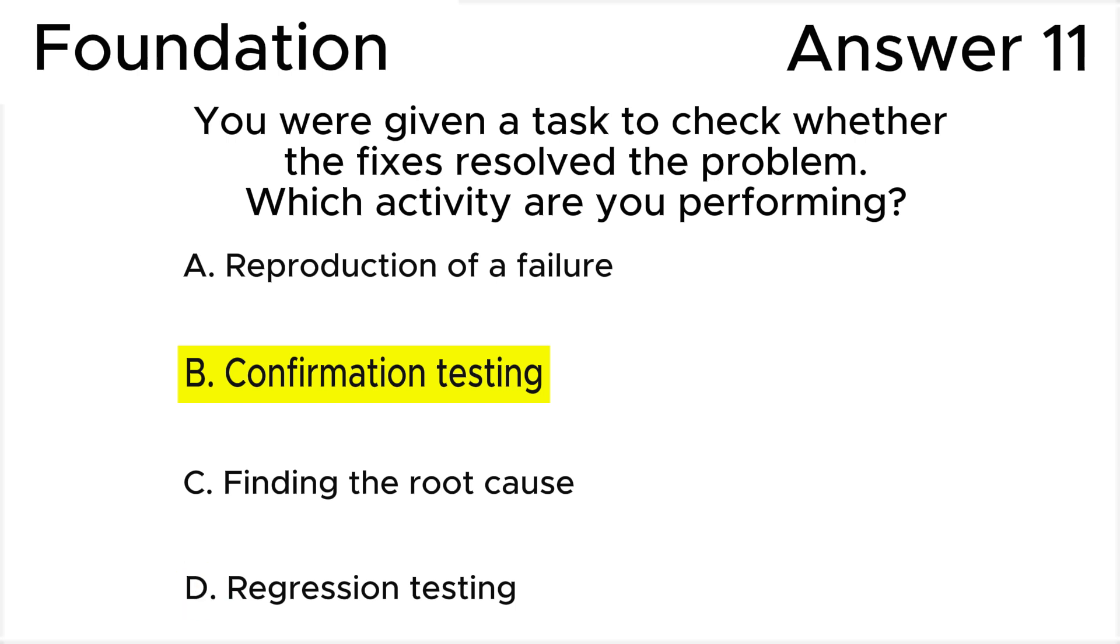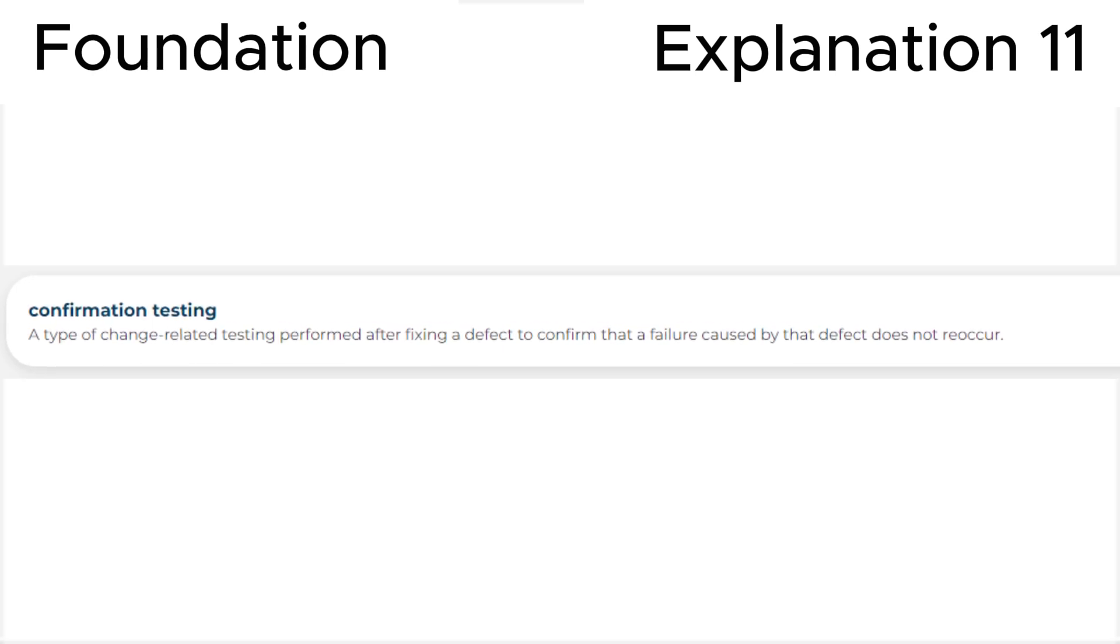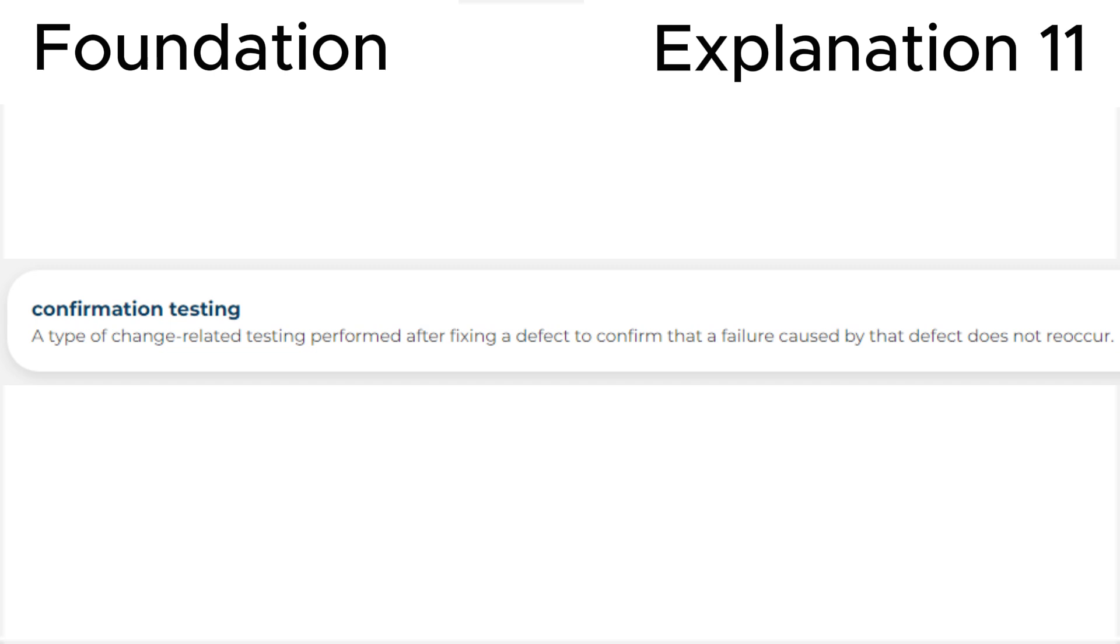It's very easy to understand these two terms. Confirmation testing is retesting to check if the bug or failure has been fixed, to check if they work properly as a result of the changes made to the code.